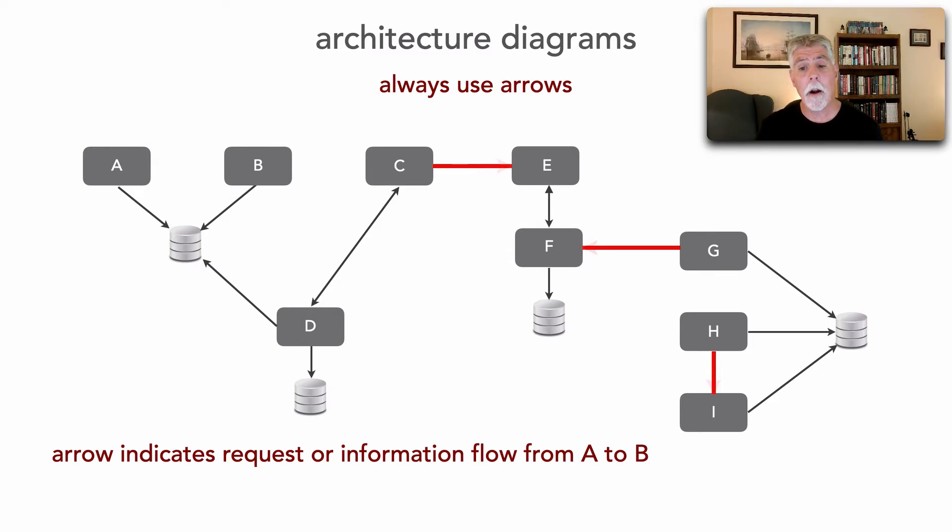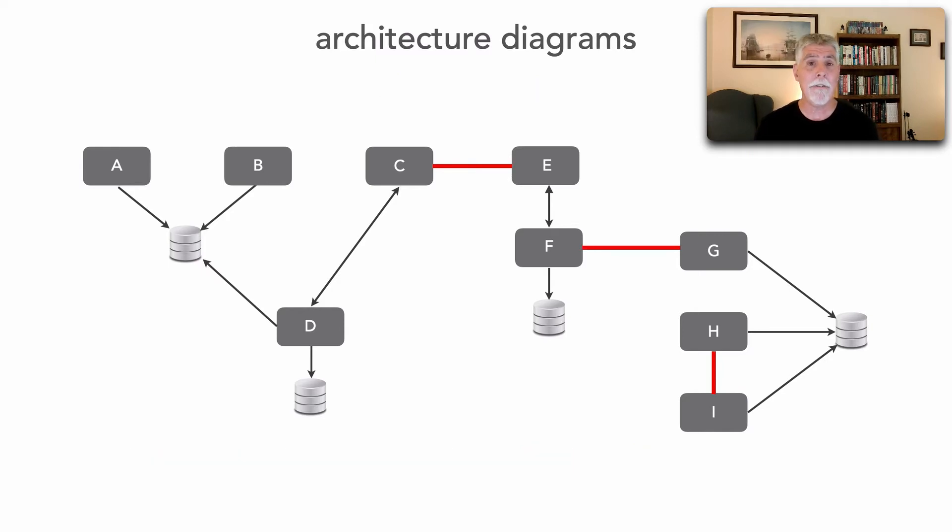And so if we use arrows, for example, now it becomes clear, and notice there's an interesting aspect here. C makes a request to E, but notice G makes a request to F. I'm not sure if I go backwards one how you otherwise would have identified that flow from F to G.